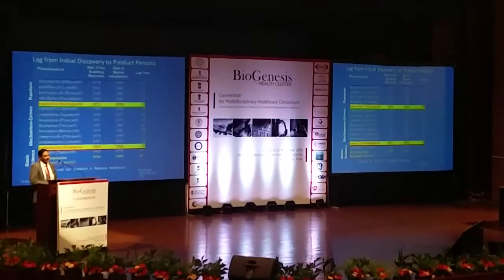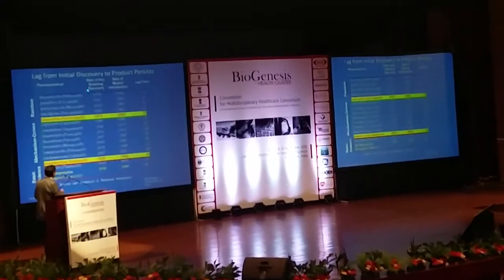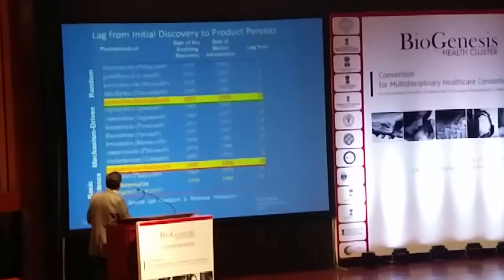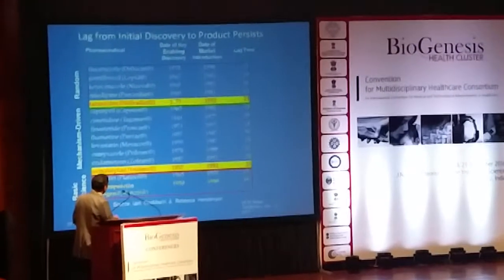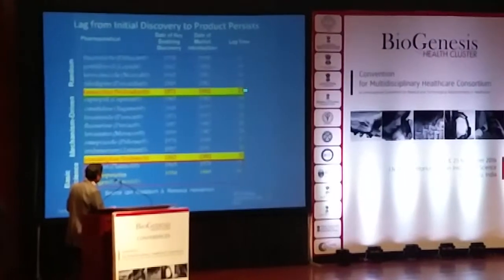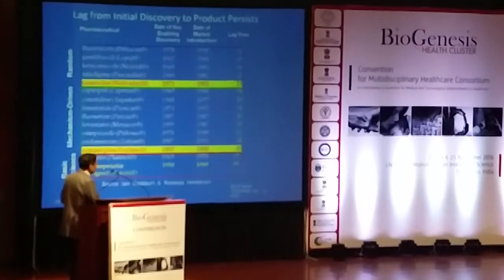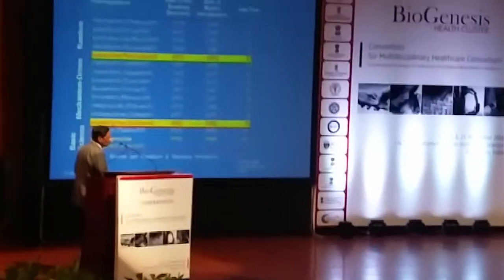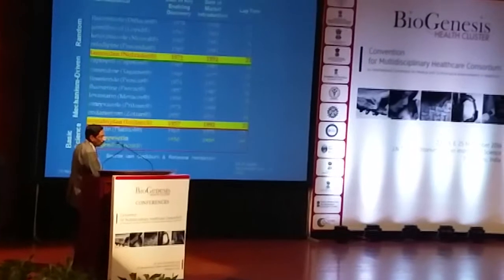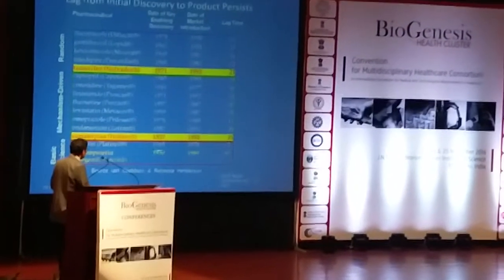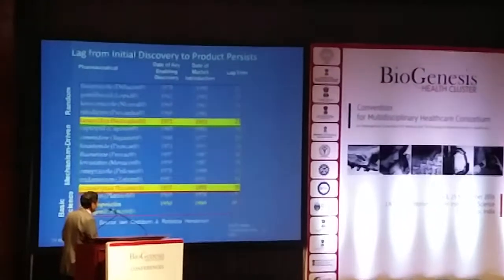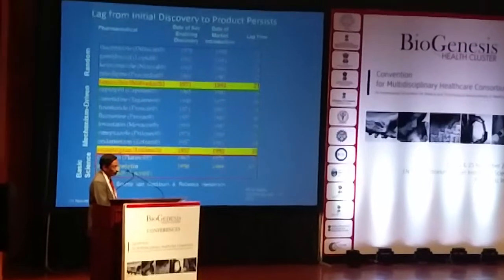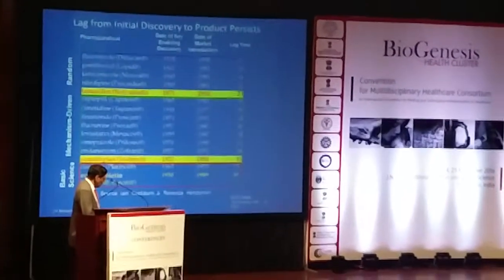One major issue is the significant delay between identifying a drug concept and marketing it. For example, tamoxifen: concept developed in 1971, drug marketed in 1992 — 21 years. Sumatriptan, a very good drug for migraine: concept was 1957, drug introduced in 1992 — 35 years. Erythropoietin, for treatment of anemia: concept was 1950, drug introduced in 1989 — 39 years. So there is a significant lag time from identifying a concept to bringing it to market.